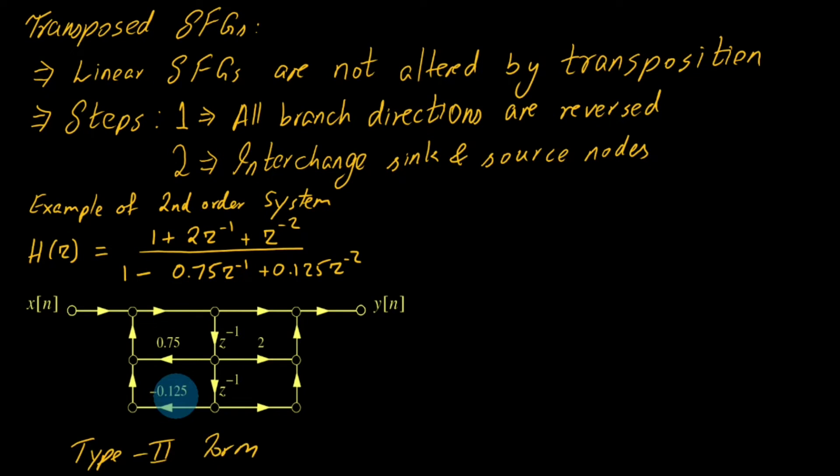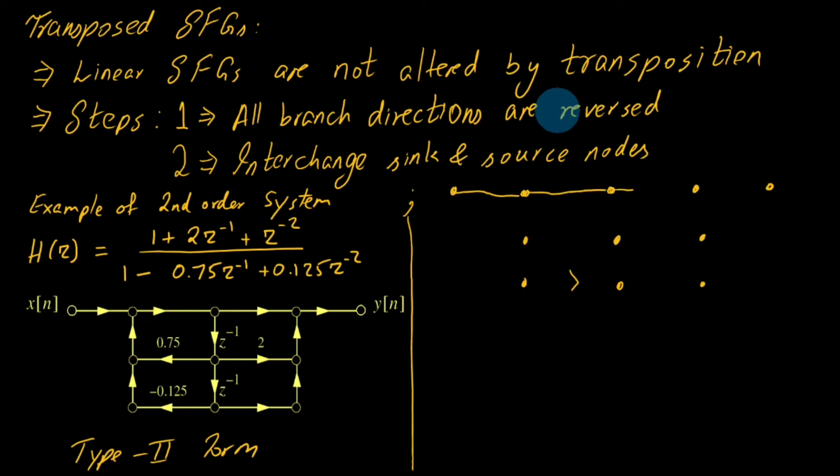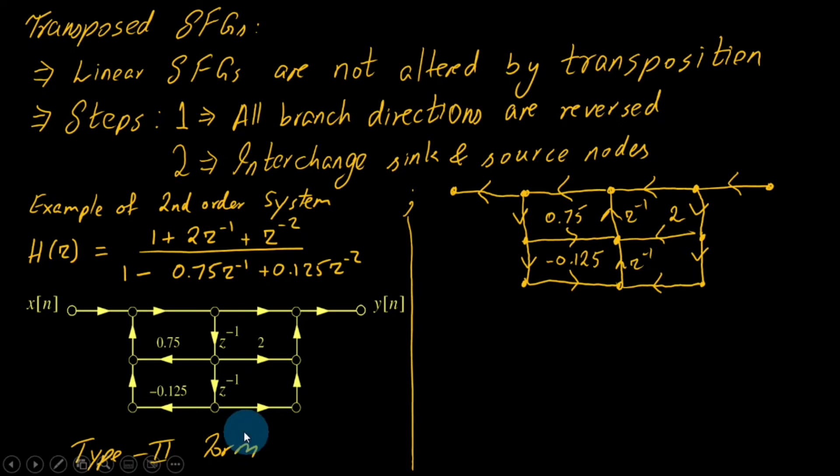Now let us proceed to step 1: all branch directions are reversed. This is a straightforward process. You can observe that we have reversed the signs of all branches. This would go down towards the left rather than towards the right, and so on.